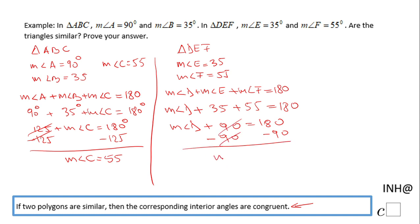Now if we take a look at these three angles in each triangle, what do we notice? We notice that angle A and angle D are congruent, both being 90 degrees. Angle B is congruent to angle E, both being 35 degrees. And the last pair, angle C and angle F, are also congruent.